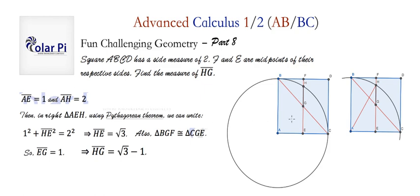And therefore, HG, which is this little piece, has got to be HE, which we found was √3, minus GE, or EG, which is 1. And therefore, √3 - 1.